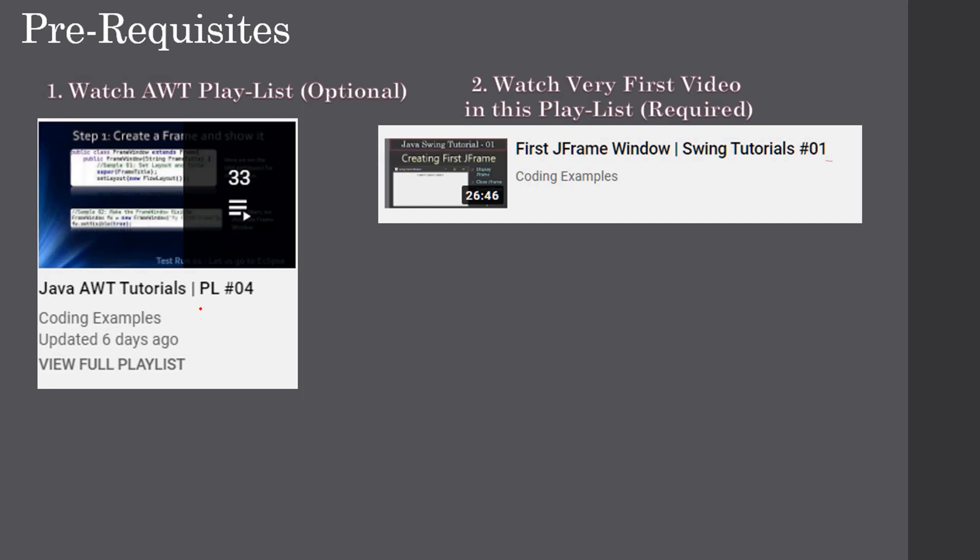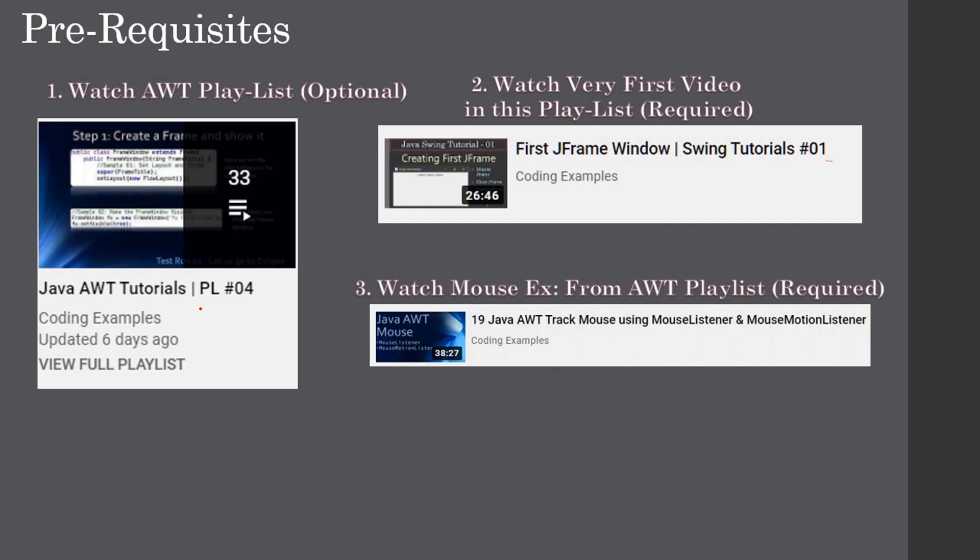We'll use the existing JFrame window with slight modifications like changing the size and position and layout. We will use the AWT MouseListener to track where the user is clicking the mouse, and at that mouse-click location we will display the pop-up menu. If you want to know more about how mouse events work, you can watch video number 19 in the AWT playlist.